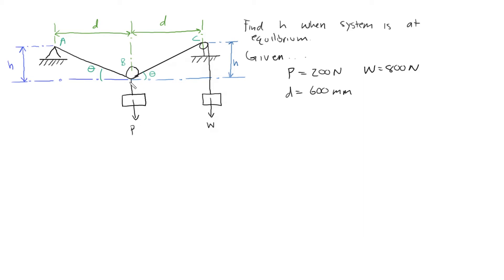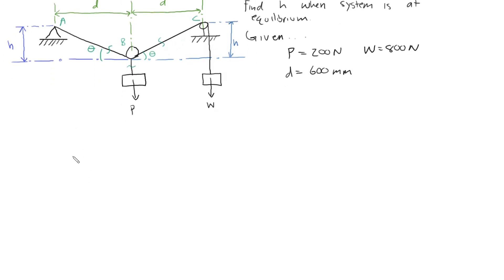The first thing we're going to do is look at the free body diagram of the point right here — we'll call it B. We're going to cut the rope here, here, and here, and look at that point. The force going downward is P. The force going this way is the tension in cable AB, so TAB, acting at angle theta. And the tension in cable BC is TBC, also acting at the same angle.